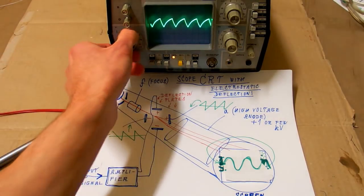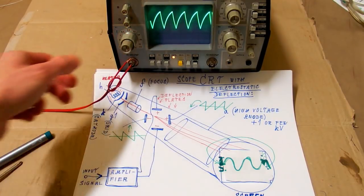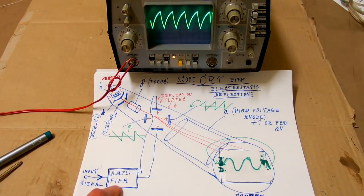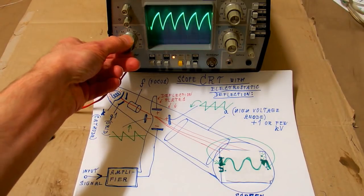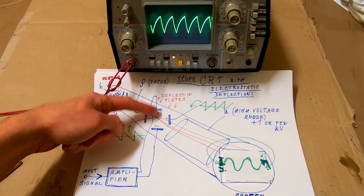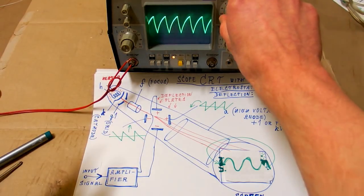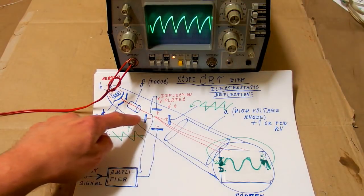When you change the sensitivity, you change the amplification of this amplifier. When you move it up and down, you just change the DC voltage on those vertical plates. When you move it horizontally, you change the DC voltage on the horizontal plates.